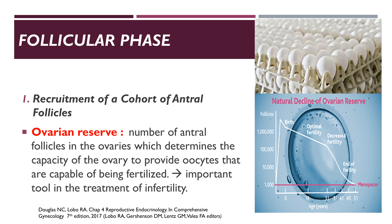Think of ovarian reserve as your basket of eggs. The most number of ovarian follicles in the lifetime of a female actually happens during the fetal stage, around 6 to 7 months age of gestation, where the ovarian reserve is around 6 to 7 million. After that, you see a downward trend: at birth, ovarian reserve is down to 2 to 4 million; down to around 400,000 at puberty; still down to 25 to 50,000 at around 35 to 37 years old; and at menopause, ovarian reserve is less than 1,000.